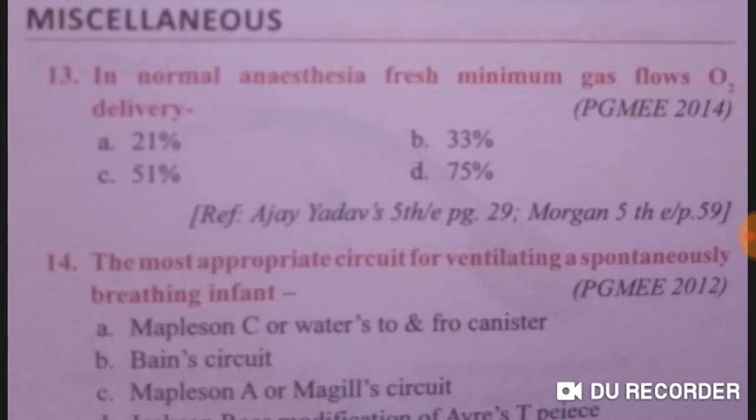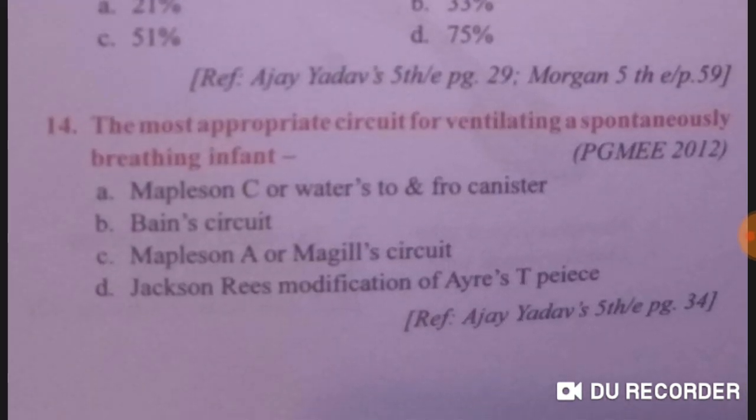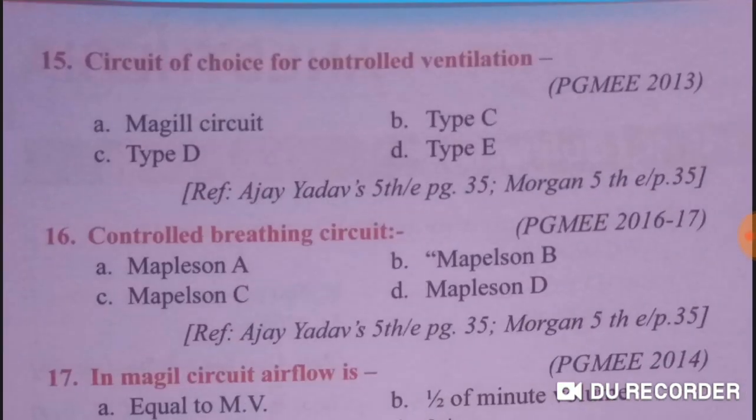For a normal anesthesia fresh minimum gas flow, oxygen delivery is 33 percent — answer is 33 percent. The most appropriate circuit for ventilating a spontaneously breathing infant is Mapleson — the answer involves type D classification.